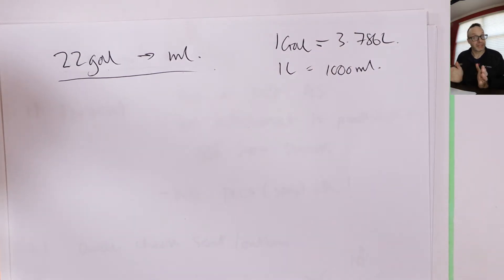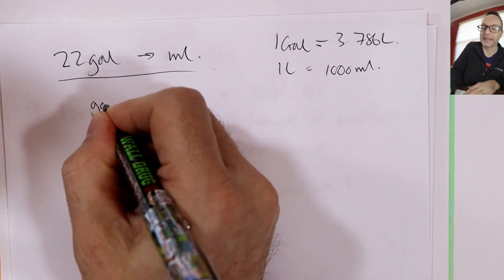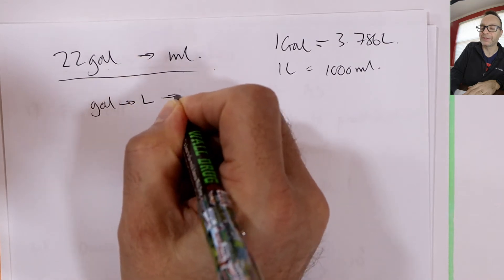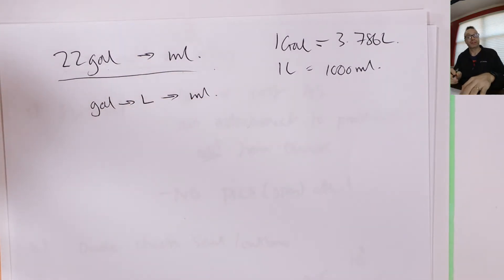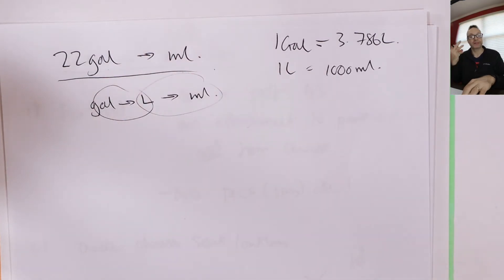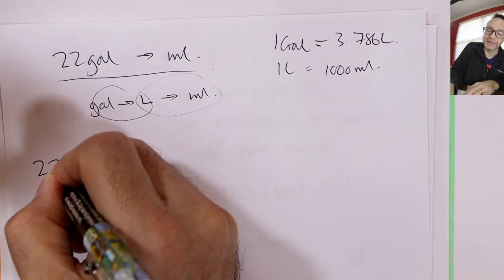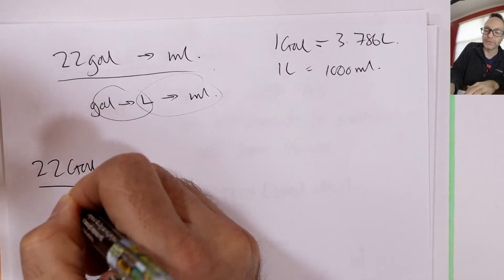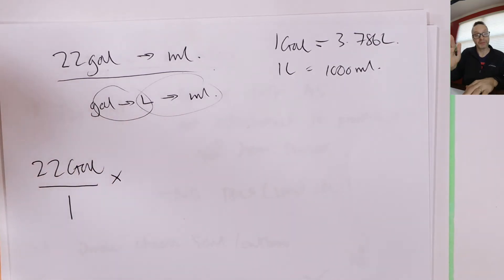So the conversion factors we use are one gallon equals, oh, let me bring that down, one gallon equals 3.786 liters. Fair enough. And then one liter equals a thousand milliliters. Okay. So this is what many people did. So the most common mistake is this. So you've got your journey. So we're going to go, if you think about our journey, gallons to liters to milliliters. That's our journey. Remember, each one of these should be a discrete or separate fraction in our conversion chain.